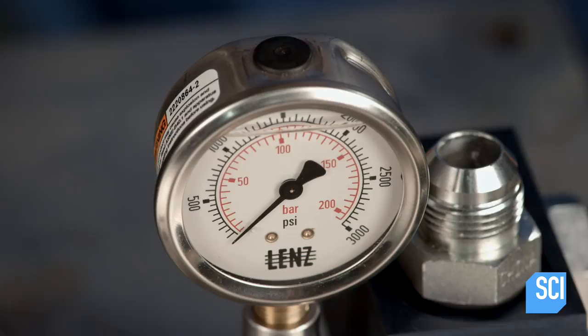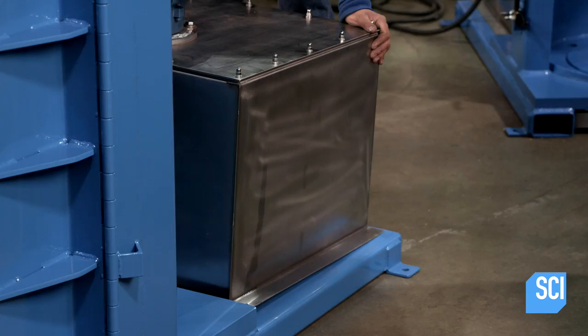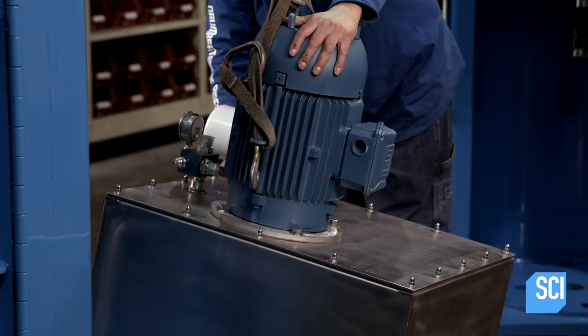To attach the hydraulic power unit, a crane does the heavy lifting as a worker guides it into place at the back of the crusher chamber.